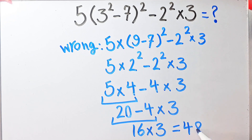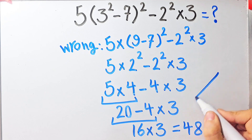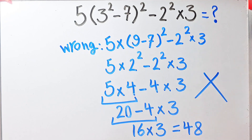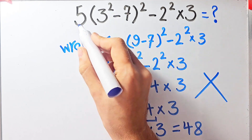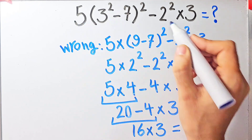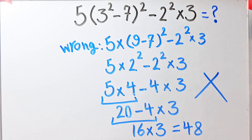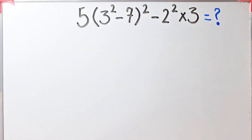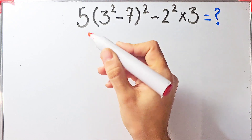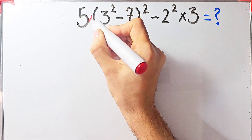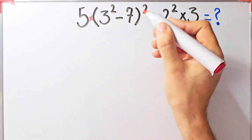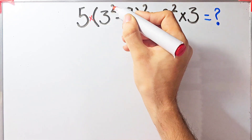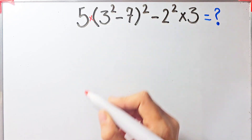But this answer is definitely wrong. Let's solve this question step by step together. In this question we have multiplication, parentheses, exponent, and subtraction.